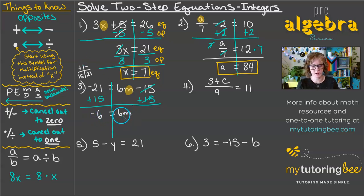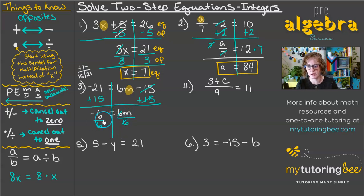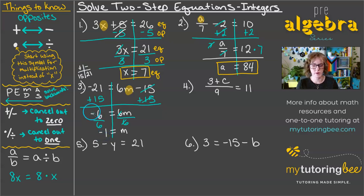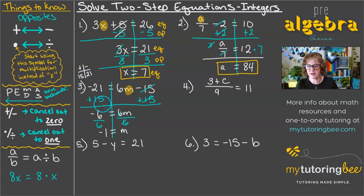We've still got this 6 being multiplied times m, so we need to undo that by dividing. We're going to divide both sides by 6 — that's going to cancel that coefficient of 6. So we're left with m equals negative 6 divided by positive 6, which gives us negative 1. Whenever we have opposite signs when multiplying or dividing, our answer is going to be negative. 6 divided by 6 is 1, and because they're opposites, it's negative 1. So m equals negative 1.